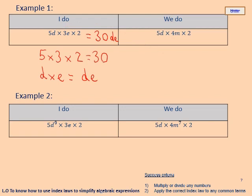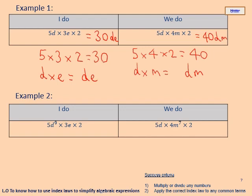For the 'We do,' again multiply the numbers first: 5 times 4 times 2 — five times four gives 20, times two gives 40. Then apply the index law to any common terms: we have d and m, which are uncommon, so d times m written as dm. The answer is 40dm. Give yourself a big tick in green pen if you got that right.